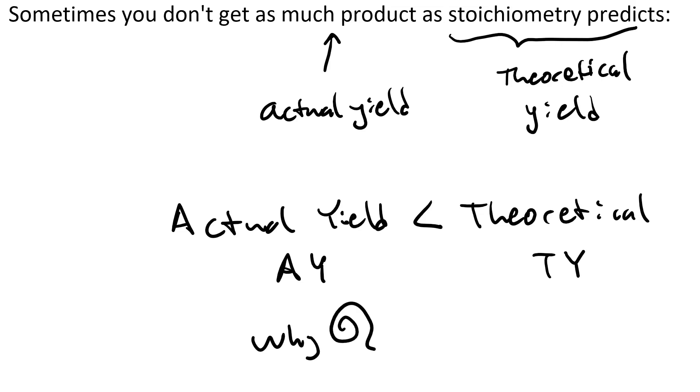Why? Well for one thing, the purity of reactants is always less than 100%. Even if a reactant is very pure, there's still some impurities in it. So the mass that you're using is higher than the actual mass of reactants.